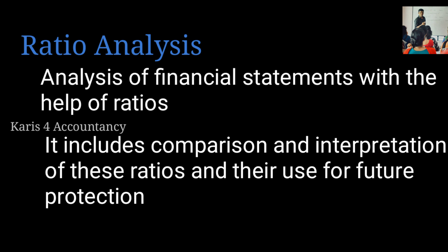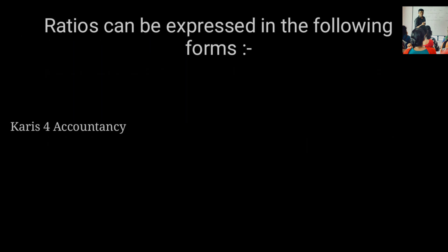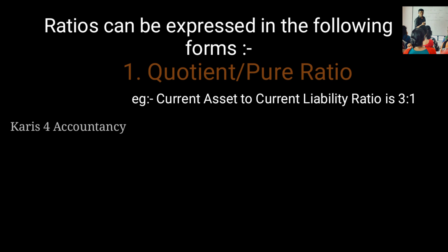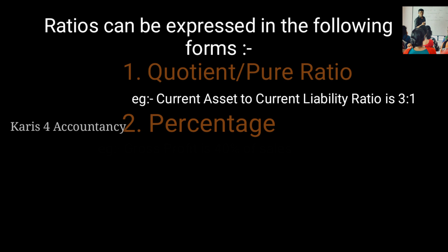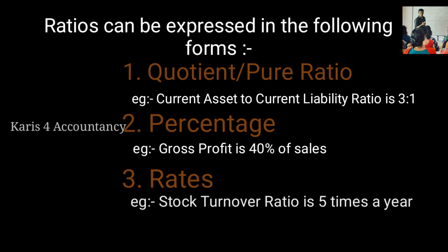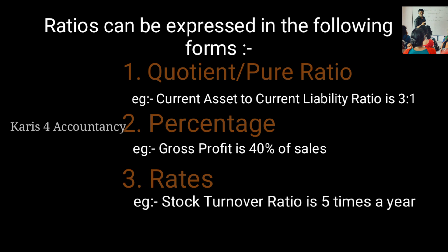Ratios are expressed in three forms. One is the pure ratio — for example, current asset to current liability ratio is 3:1. Two is percentage — for example, 40% in sales. Three is rate — for example, stock turnover ratio is 5 times a year.